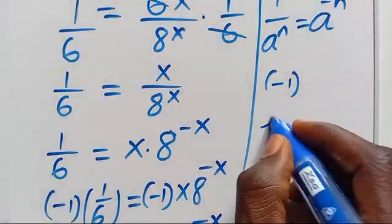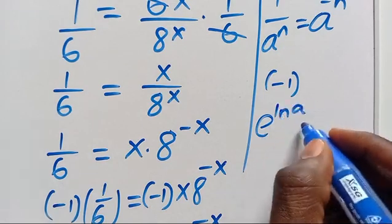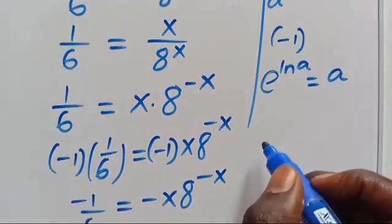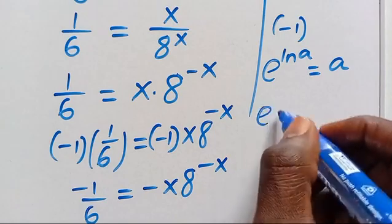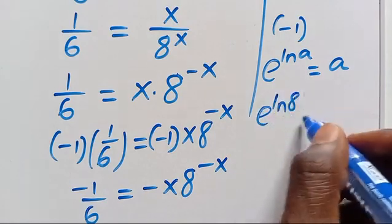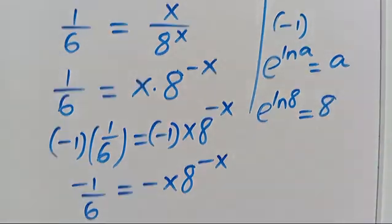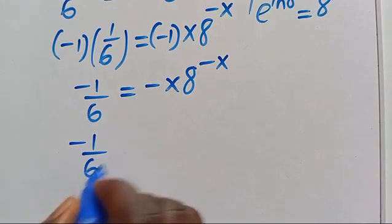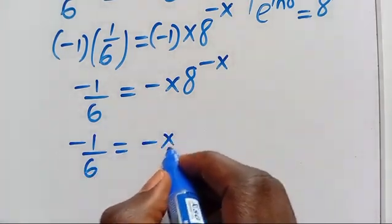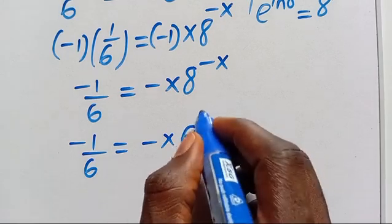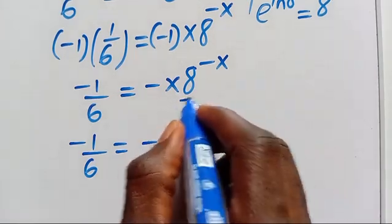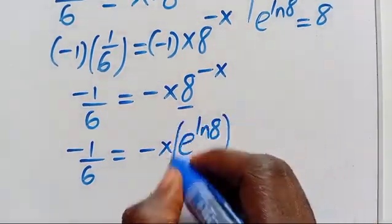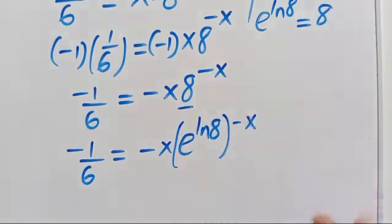Having done this, recall that when we have e to the power of ln(a), this will give you back your a. So let's apply it here: minus 1 divided by 6 equals minus x times e to the power of ln(8), and we replace the base accordingly, raised to the power of minus x.